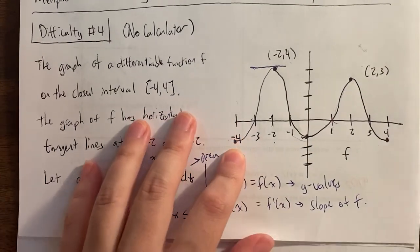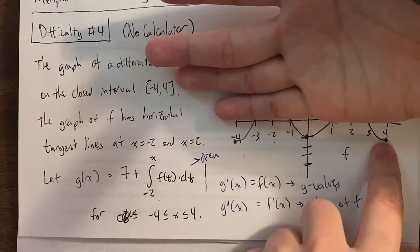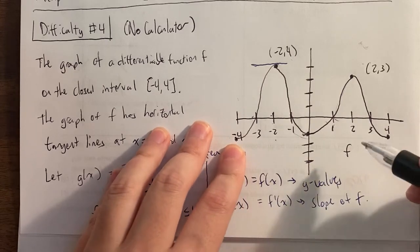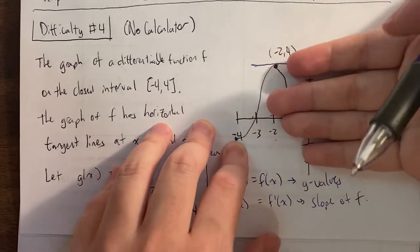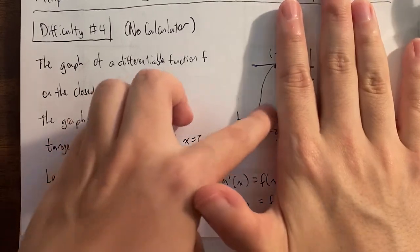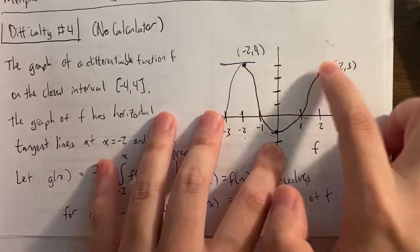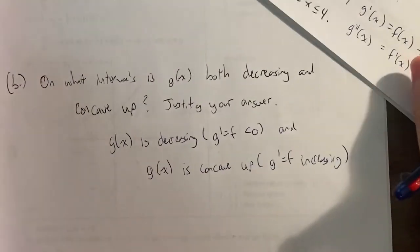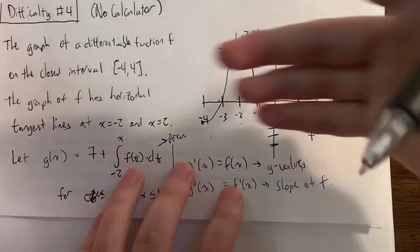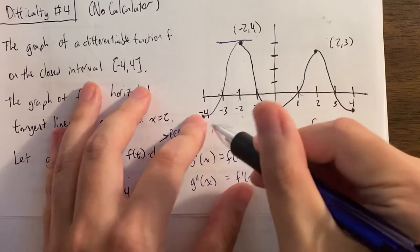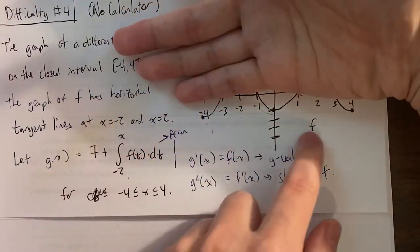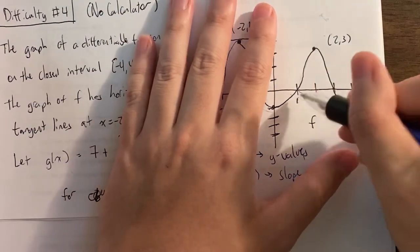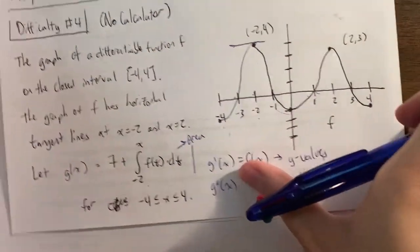G is decreasing when g prime equals f is negative — so it's one of three portions. G is concave up when g prime equals f is increasing — when the function is literally going up. So it's from negative 4 to negative 2 because it's going up, and also from 0 to 2. What we want is where both happen: under the graph and going up. So it's negative 4 to negative 3 because g prime equals f is negative and increasing, and also 0 to 1.